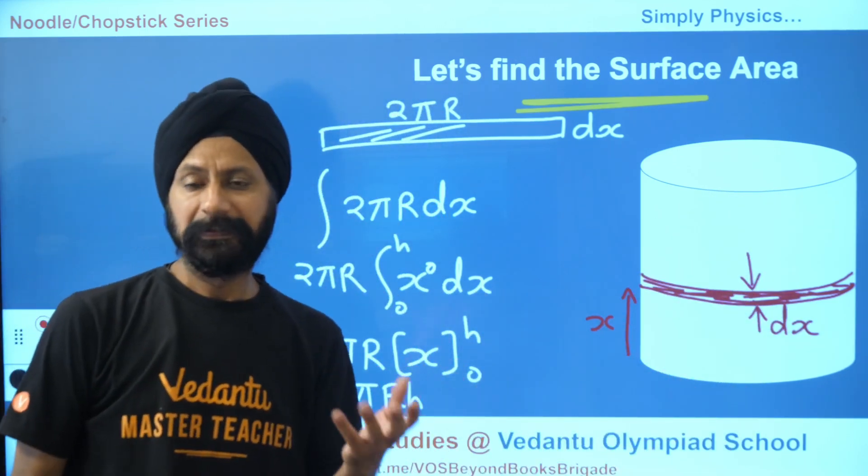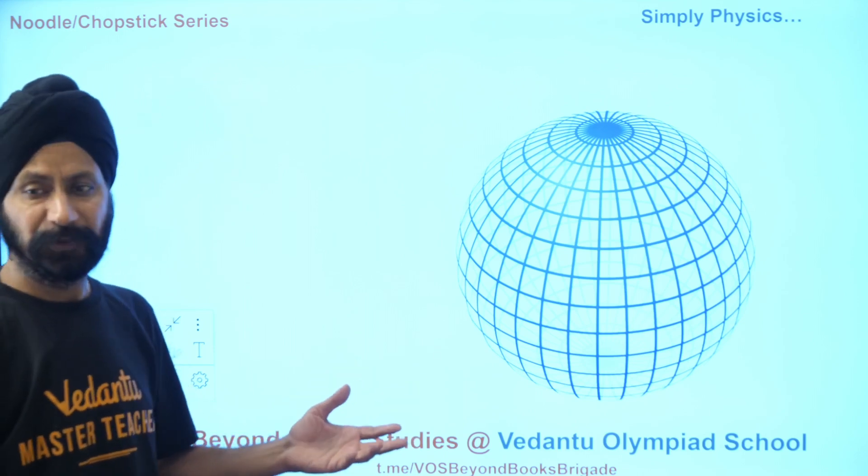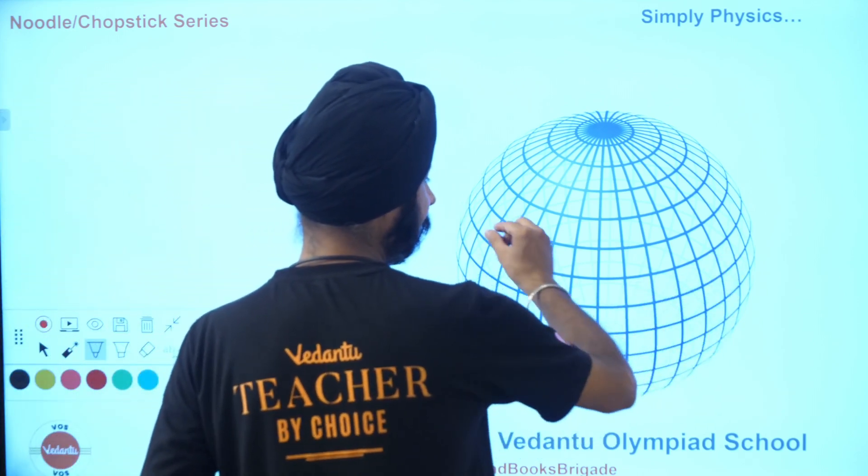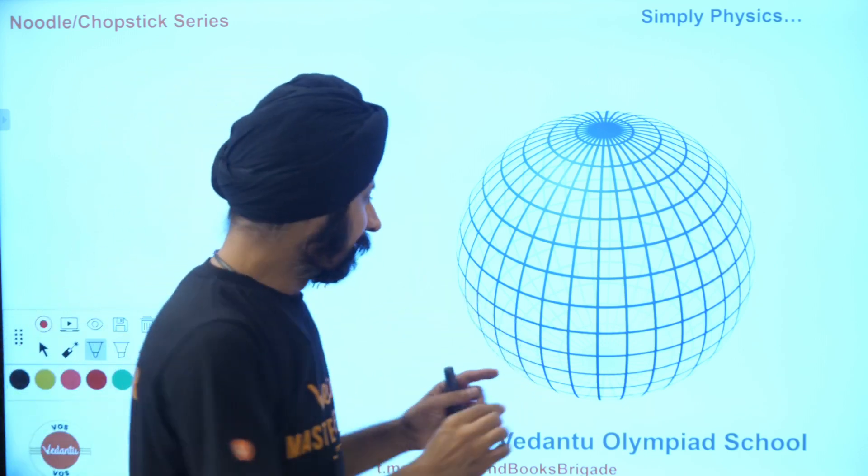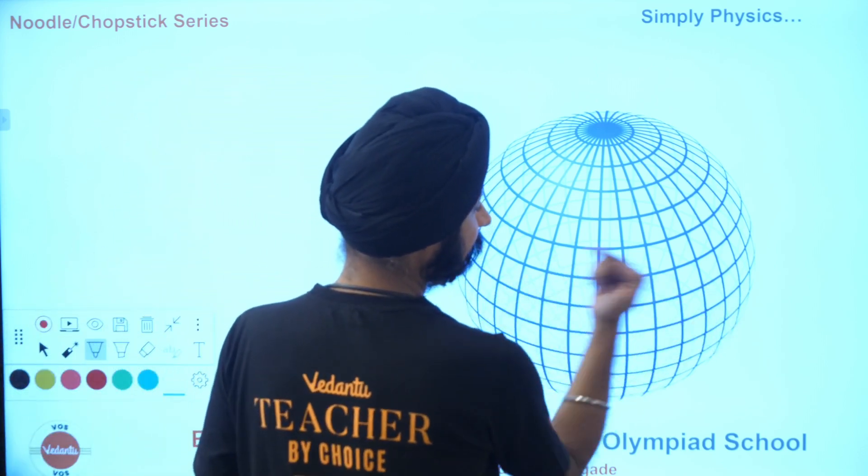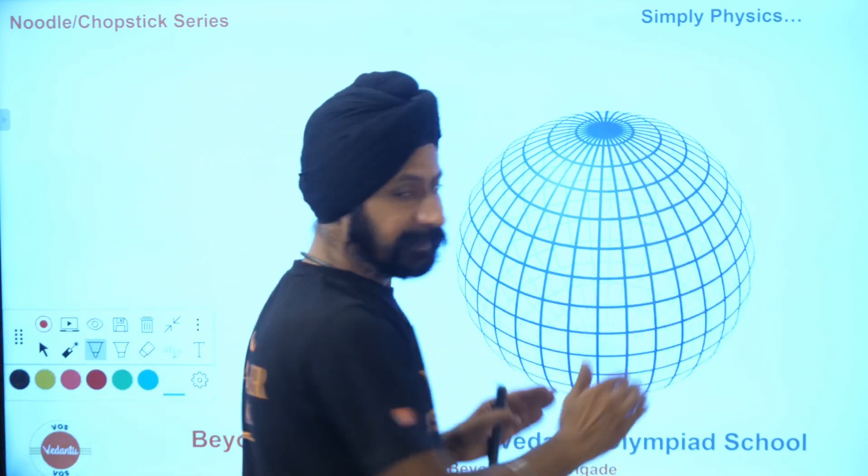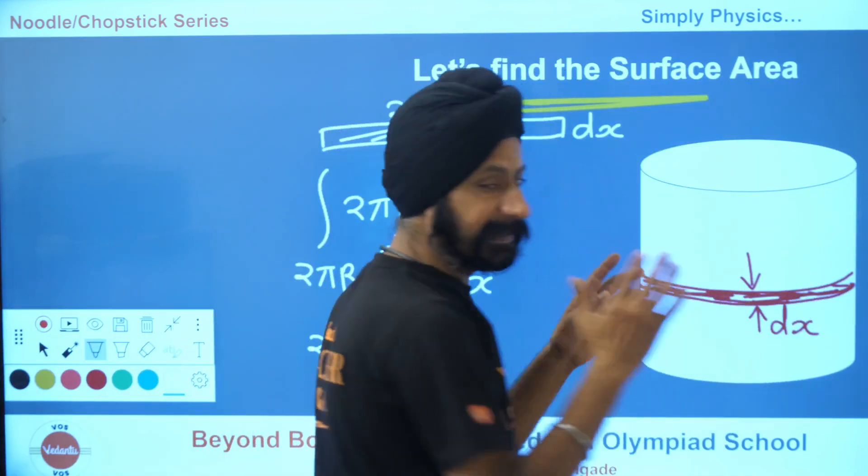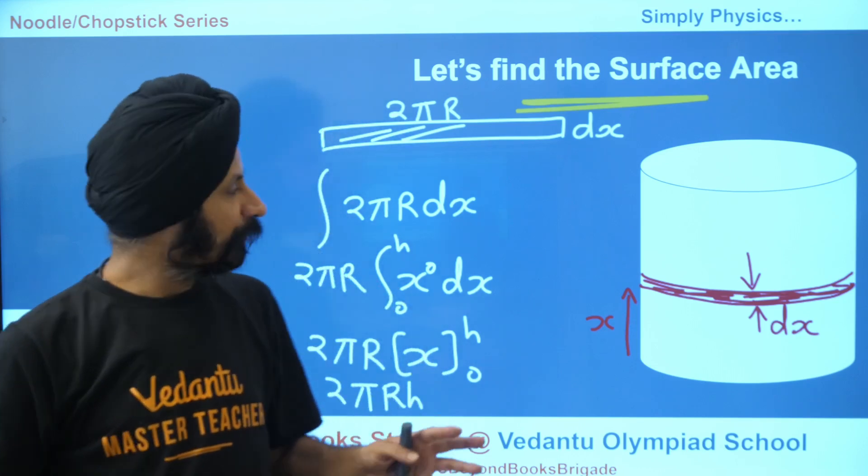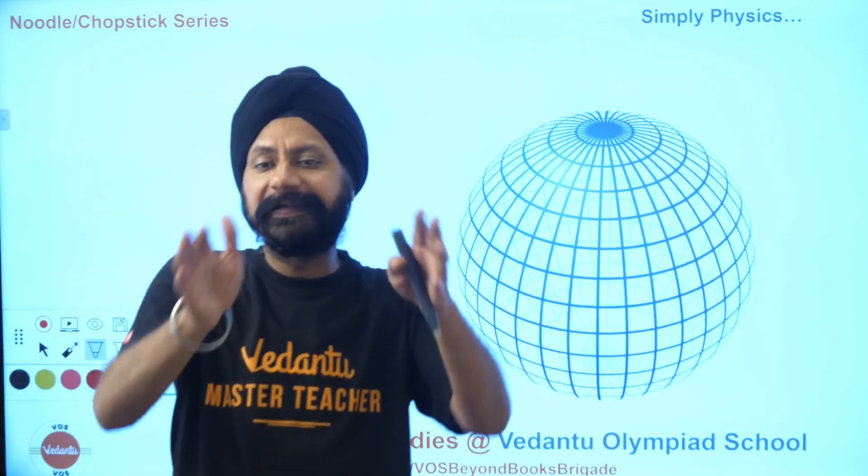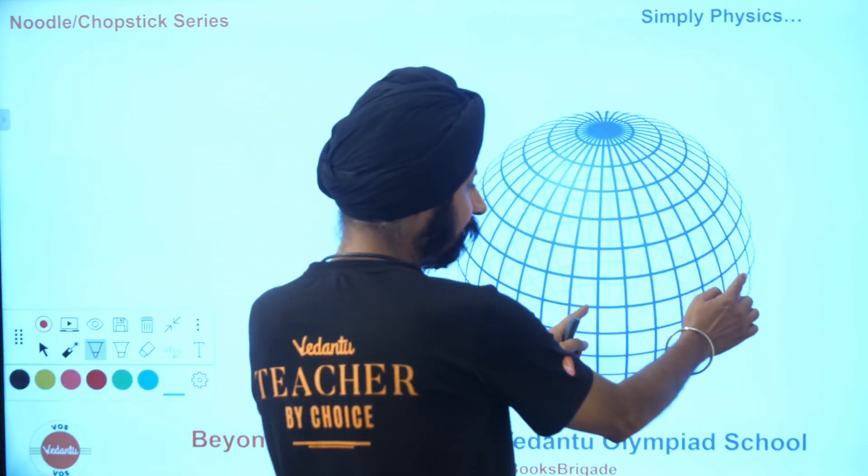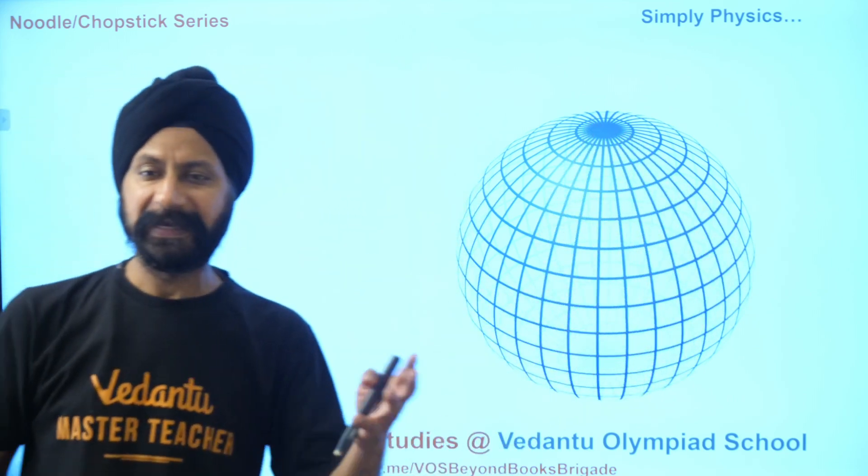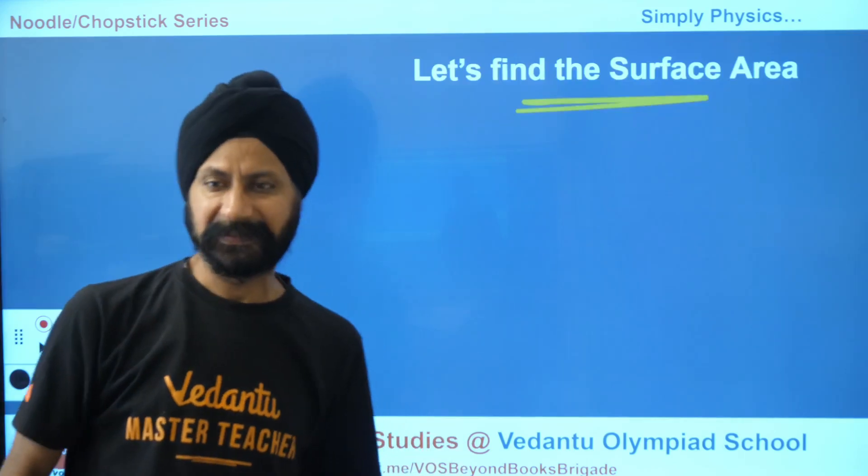But then what about sphere? Sphere is similar. If you think about sphere, isn't sphere also all these tiny little strips? But the thing is getting thinner. The radius is not the same. Here, all these strips had a radius of r, the same r. Now you can visualize this as the r is decreasing. If it was r here, then less, less, less. At this point, r is 0. So you can't do the same thing, but you can do similar things. Let's start doing that.